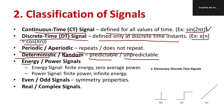An energy signal has finite energy and zero average power. A power signal has finite power but infinite energy. This distinction is very important for competitive examinations and may also appear in university examinations.